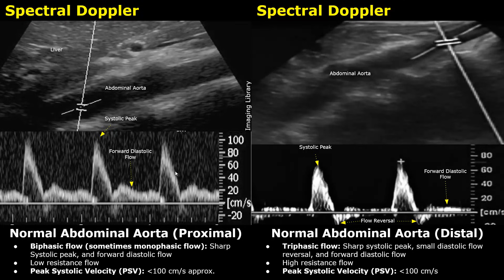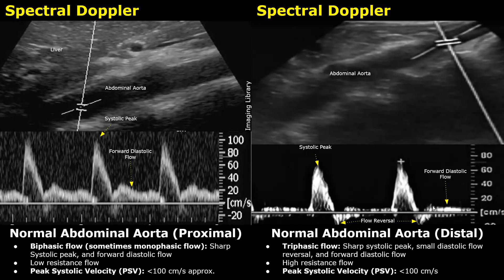The peak systolic velocity in the aorta is usually below 100 cm per second approximately. In the distal aorta, as we go down towards the umbilicus, we will find a triphasic flow on spectral Doppler. It is present in the aorta below the renal arteries. The waveform has three components: a sharp systolic peak, followed by a small flow reversal, and finally a forward diastolic flow.